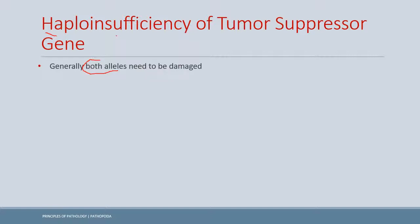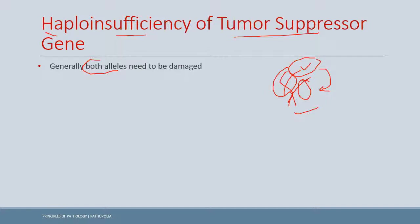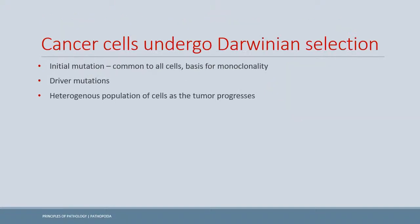Haploinsufficiency is seen in Marfan syndrome and Ehlers-Danlos syndrome, where there is a defect in collagen formation. Collagen is made up of three protein chains, and if one chain is defective it causes misfolding of the other two chains. Therefore, a defect in only one allele causes problems in collagen formation — a similar concept applies to tumor suppressor genes.